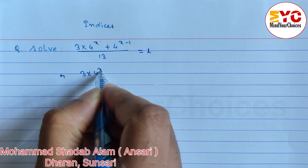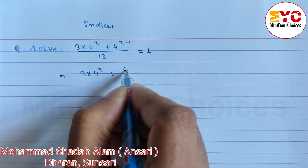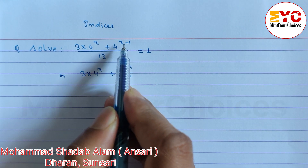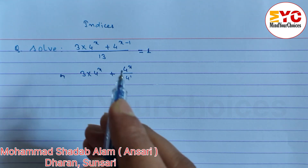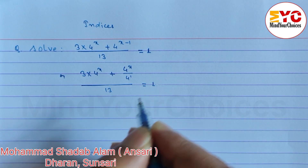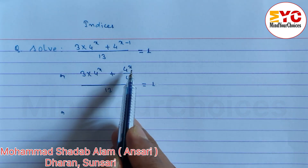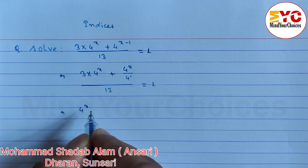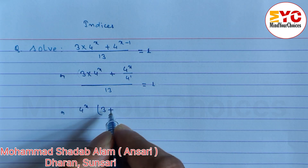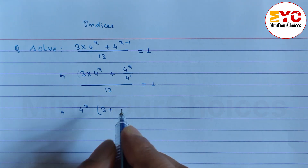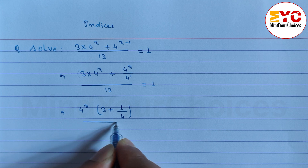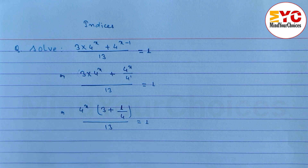We can rewrite 4 power x minus 1 as 4 power x divided by 4 power 1. Now you can see here, 4 power x appears in both terms, so we take 4 power x as common. What remains is 3 plus 1 over 4, all divided by 13, is equal to 1.